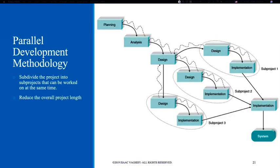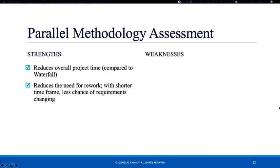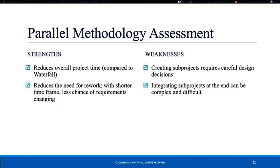Not every company in today's dynamic world has the time for sequential development, so parallel development is where a company does the planning and analysis in depth, and once we get to the design stage, we do design in parallel steps. We split the system into various sub-projects, and finally integrate those sub-projects to have the final product. This reduces the time required for development and rework, but creating and integrating sub-projects is no easy technical task.